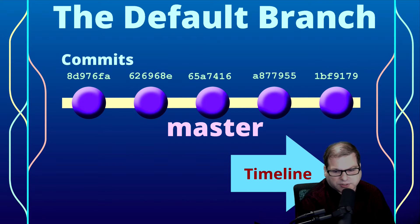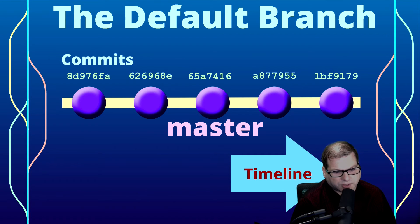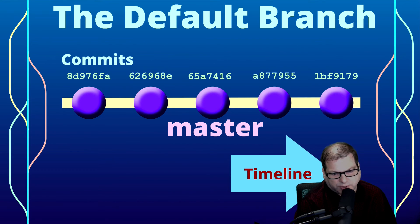Let's talk about commits and the default branch. Commits are basically collections of changes at any point in time on a particular timeline, and the commits are identified by a SHA-1 identifier. However, you can actually reference them with an abbreviated first six or seven digits of that SHA-1. A collection of these commits together can be on a timeline which we refer to as a branch.